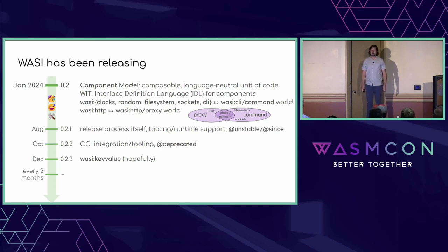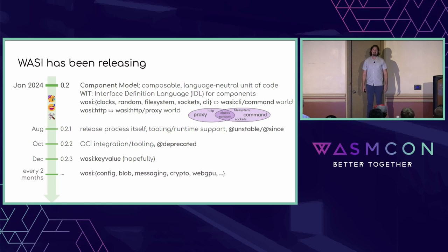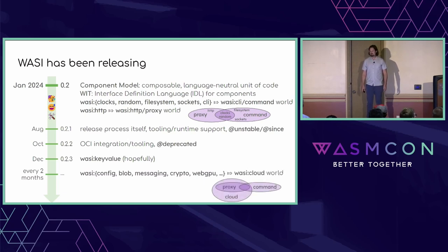While it's not clear exactly what order things will happen, there's a lot of excitement and work on WASI config, blob, messaging, crypto, and WebGPU. Using all these new interfaces, we can define a new, bigger cloud world which, extending that previous Venn diagram, would be a superset of the proxy world.